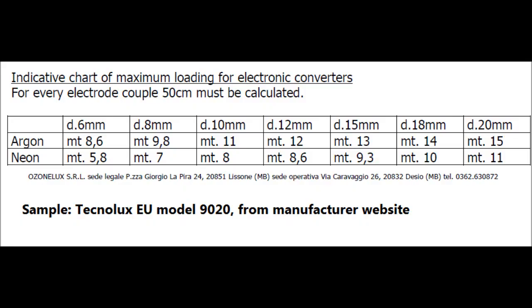The necessary output voltage is a function of the total tubing length on the sign, the tube diameters, and the amount of electrodes. You can get a footage chart from your transformer manufacturer or use tables of values for the volts per foot and per electrode pair.